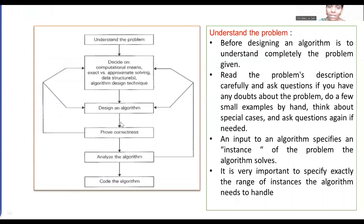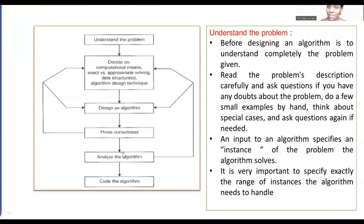Then it's designing an algorithm, and you have to prove its correctness. We also have to know how much time it is going to take and how much space is required to execute your algorithm — that all comes under analyzing. After finding an efficient algorithm, we go to coding. Now we are going to discuss all these things briefly in this lecture.